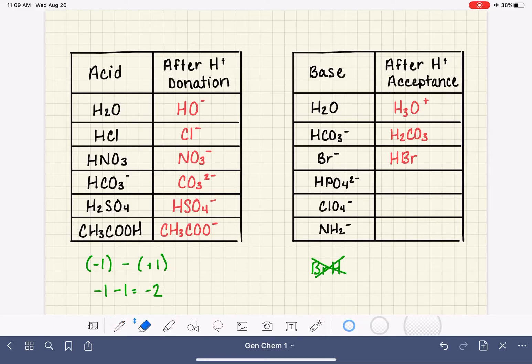HPO4^2-. So we're going to be adding a hydrogen. That's going to give us H2PO4. And we're also going to be adding a charge. So we have this two minus charge, and we are going to be adding a plus one. The math is very funny in these. So we have starting with the two minus, and then we're going to be adding a plus one charge. So we have minus two plus one is minus one.